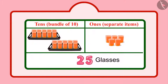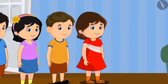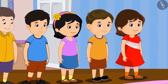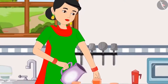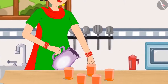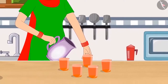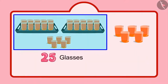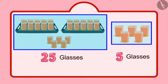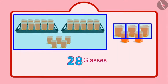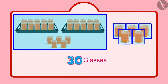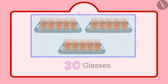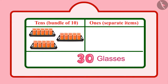Children, in these 25 glasses, 2 means 2 tens and 5 means 5 units. After some time, some more friends of Chotu came home, and Chotu's mother made more sherbet for them. Chotu distributed a total of 25 glasses and then 5 more, making it 26, 27, 28, 29, 30. That means 30 glasses. So children, in 30, there are 3 tens and 0 units.